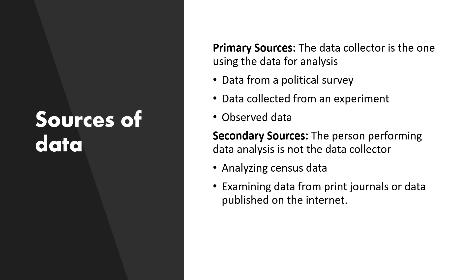Data can be collected from two types of sources: primary or secondary. In a primary source, the data collector is the one using the data for analysis — for example, a political survey, data from an experiment, or observed data. In a secondary source, the person performing the data analysis is not the data collector.